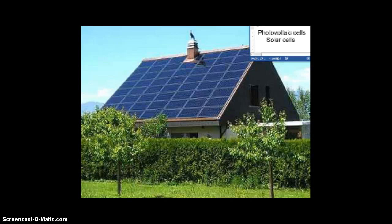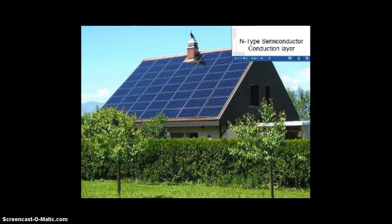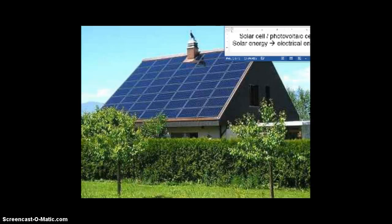A photovoltaic cell is more than just a flat layer. It actually has several layers. The top layer is called the n-type conductor, or the conduction layer. Before we get into the details of the layers, what's the energy transformation that happens in a solar cell? These are called cells because, like a battery — which is another type of cell — we generate electricity, or electrical energy, from solar energy. So just like a battery, solar cells produce electricity.